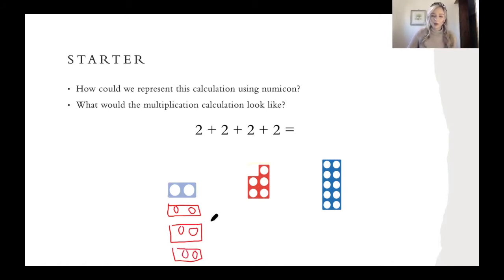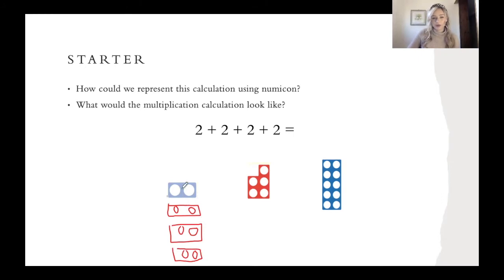Now this can show me quite quickly how many I have altogether — I can just count them up: one, two, three, four, five, six, seven, eight. I could also count in my twos: two, four, six, eight. I know that I have eight altogether.